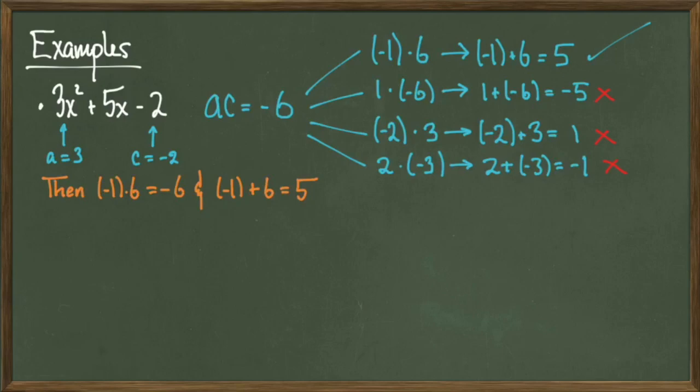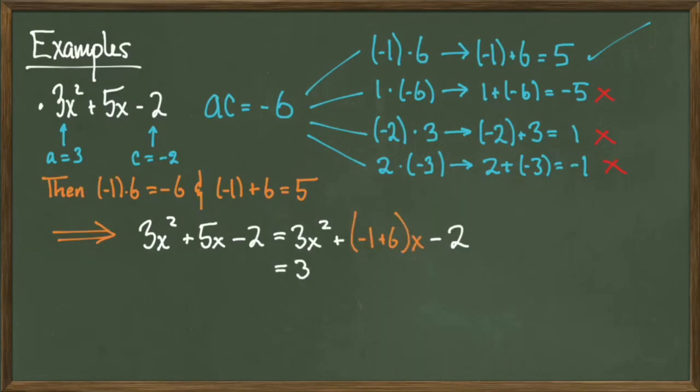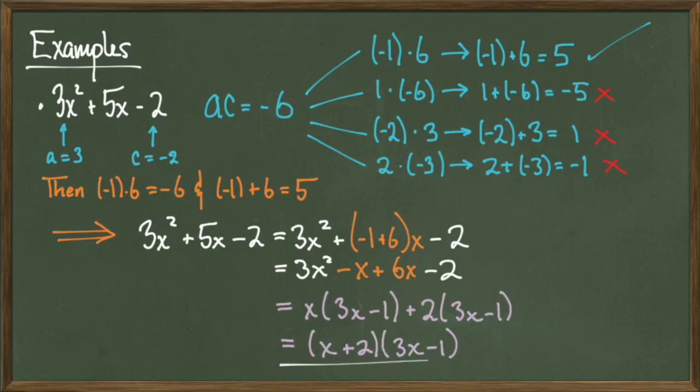Negative 1 and 6, whose sum is equal to b, in our case 5, and whose product is equal to a times c, which in our case is negative 6. Now moving on to step 2, we can replace 5 with the sum of factors. Once we simplify, we get 3x squared minus x plus 6x minus 2.